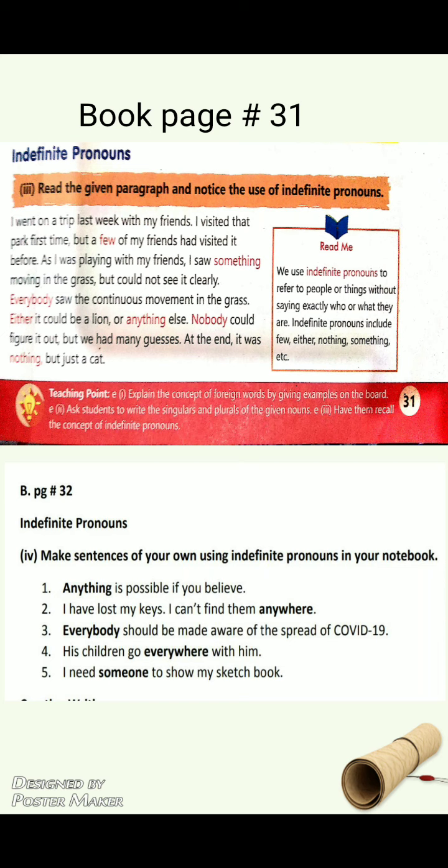This is the exercise: make sentences of your own using indefinite pronouns in your notebook. It's on book page number 32. Some sentences are solved for you. Number one is: 'Anything is possible if you believe.' 'Anything' is an indefinite pronoun in this sentence — kuch bhi possible hai agar aap yaqeen rakho — meaning not a specific thing is mentioned, there is ambiguity, just a general statement.